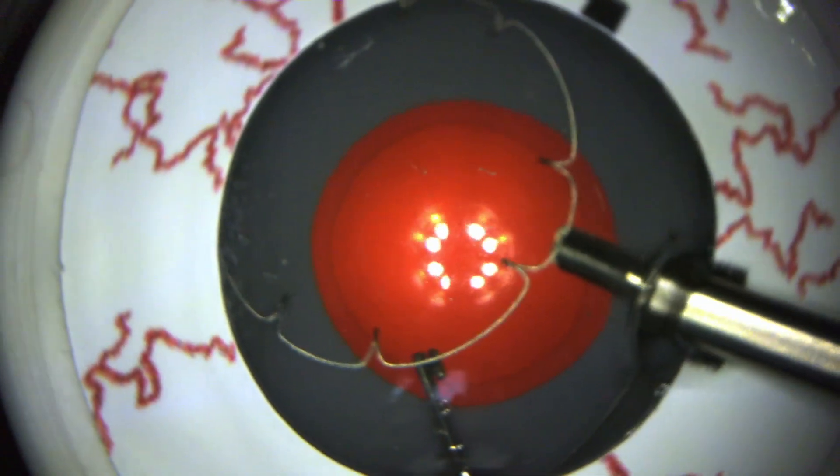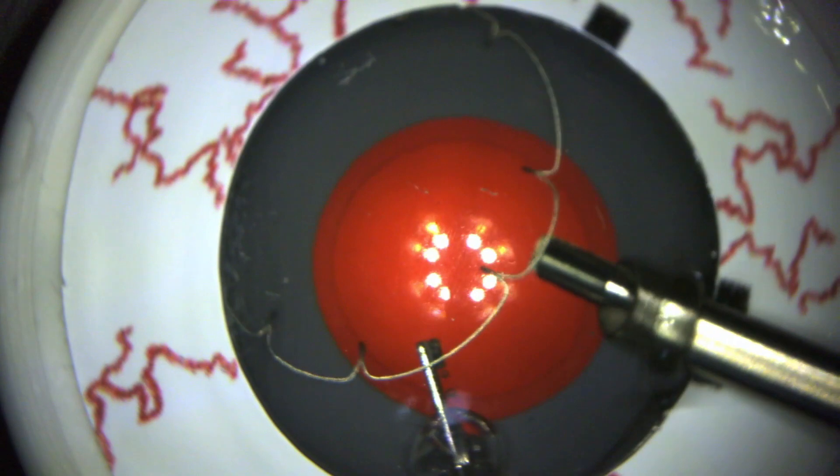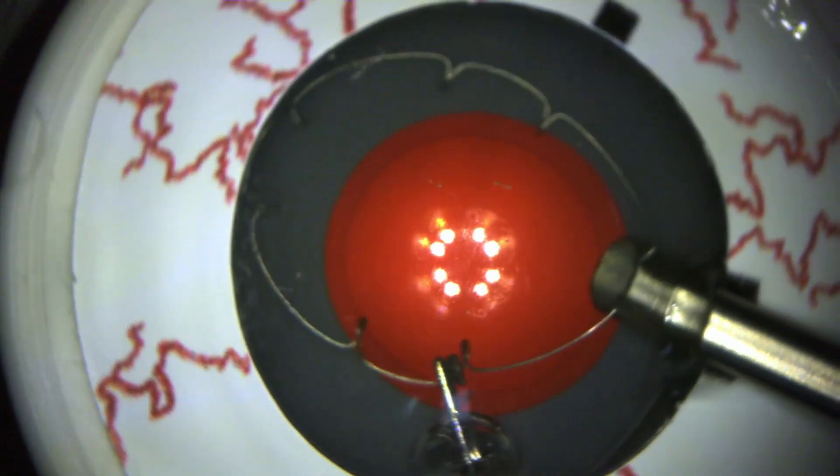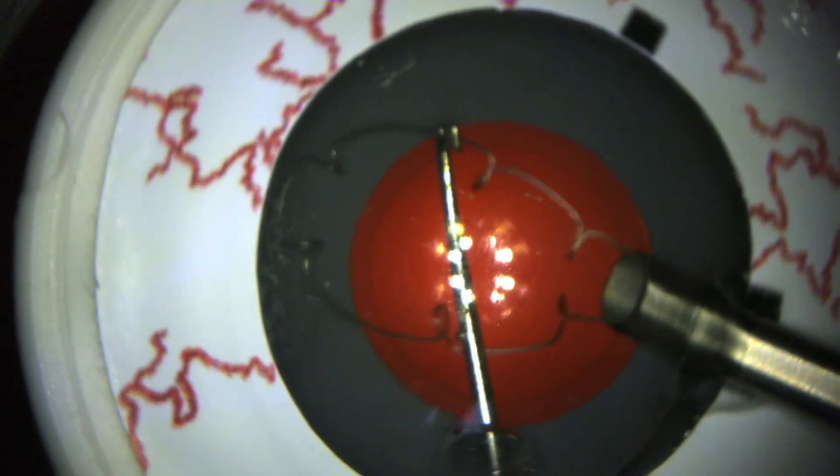Reinsert the injector. Once inserted, advance the plunger to engage and grab the device, using a secondary instrument to help guide the X1 back into the injector. Be sure to leave the injector inside the eye until it is fully retracted into the cannula, then remove the injector.